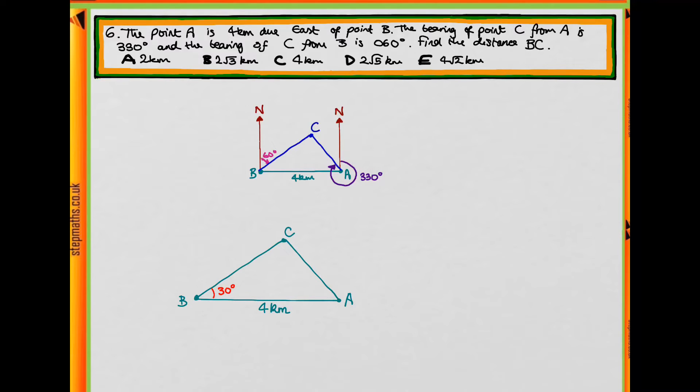So pause the video and see if you can do something similar to work out the angle here at A. Okay, well again we have a 90 degree angle here, and we do 330 around here. So we know that to get to 360 degrees in the full circle, this bit up here must be 30 degrees. And so this bit at A must be 60 degrees.